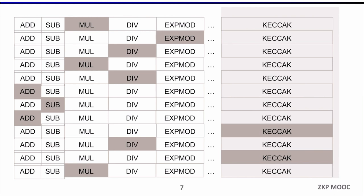If we tried to build this proof naively in Circom — for example, putting all opcodes in parallel and repeating them for every execution — the number of constraints would be thousands of trillions. That would be completely impossible. For example, imagine a KECCAK opcode: if you have to repeat that many times the constraint count becomes unworkable.